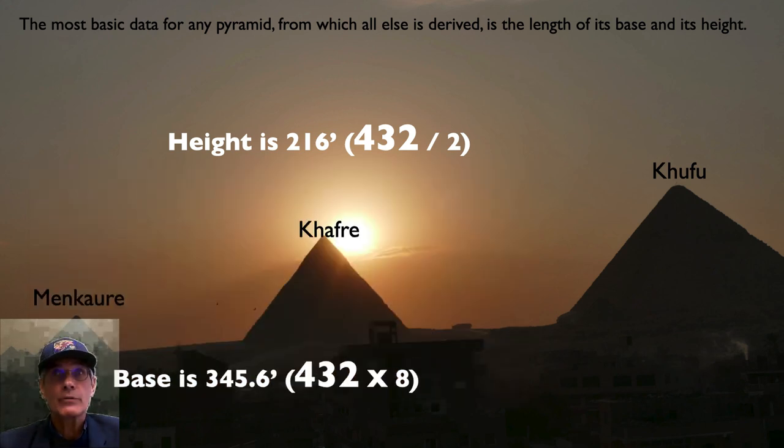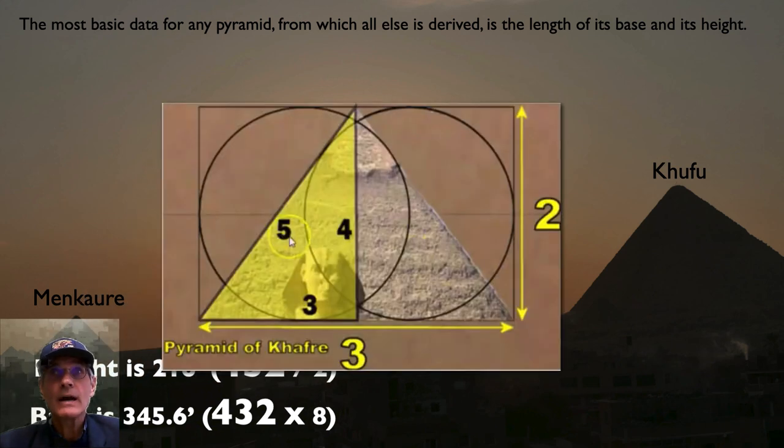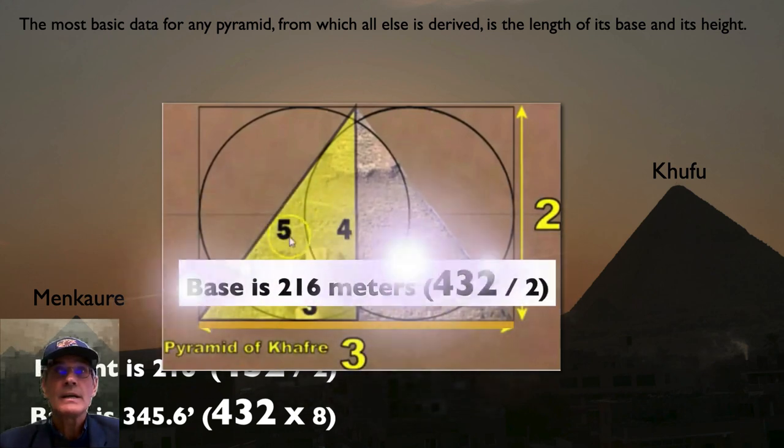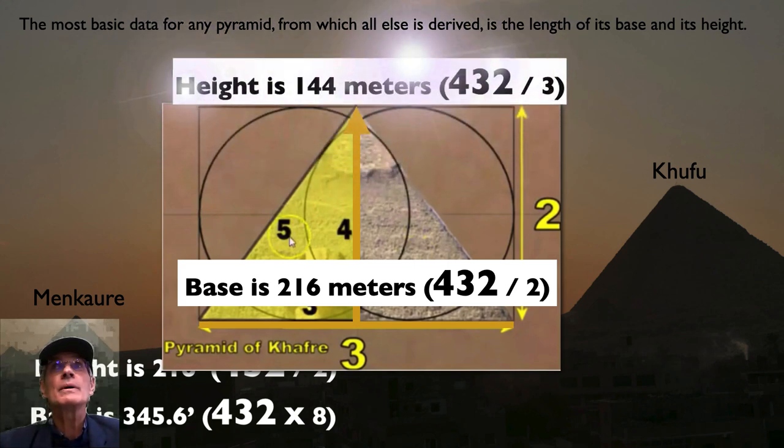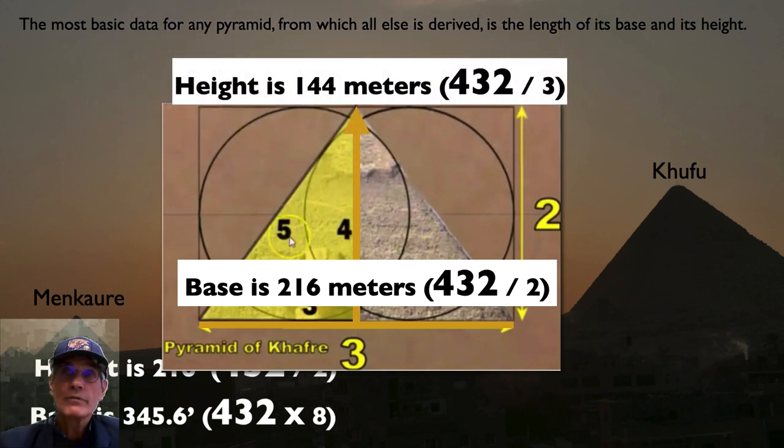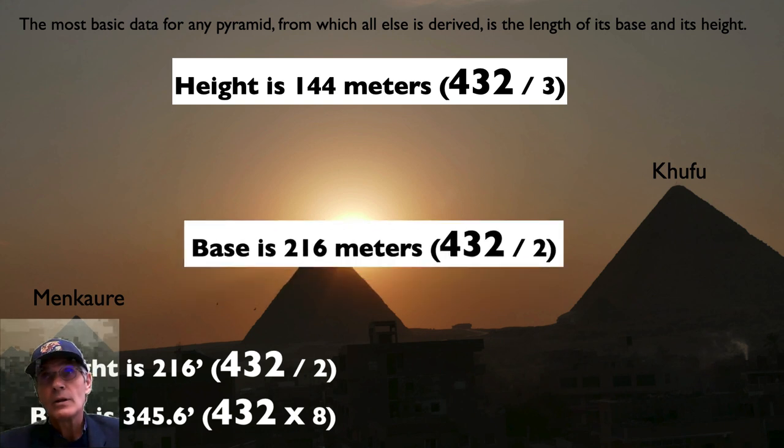So let's look at Khafre. Let's put Menkaure down there. So Khafre, the famous Pythagorean 345 pyramid. The Vesica Pisces there, three wide and two high. So the base of the pyramid of Khafre is 216 meters. Again, 432 divided by two. And then the height of the Khafre pyramid is 144 meters, 432 divided by three. Unbelievable.